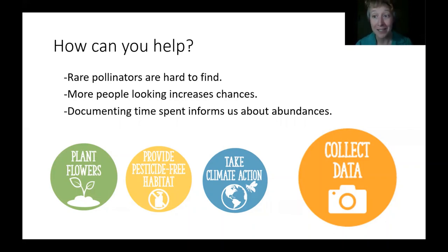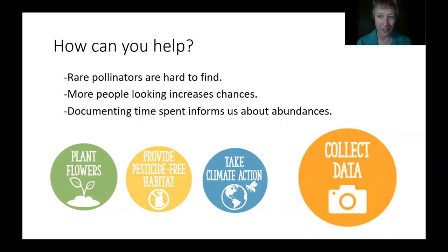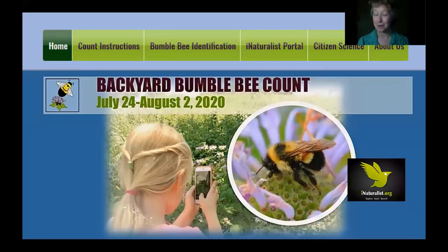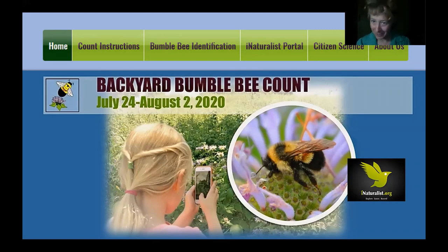Rare pollinators, as you can imagine, are hard to find. The more people that we have looking, the better chances we have of finding them. With this project we're also documenting the time that you spend looking, and that helps inform us about abundances of these bees. The Backyard Bumblebee Count is happening this year from July 24th to August 2nd. These dates were chosen as the time when colonies are typically at their peaks and you'll be more likely to find some of these rare bees.